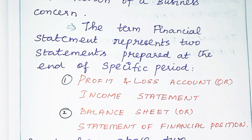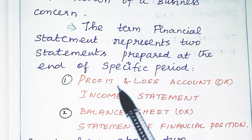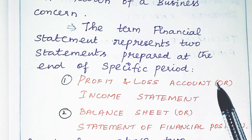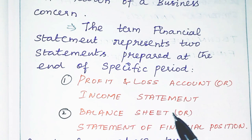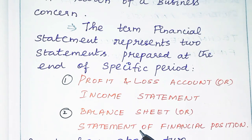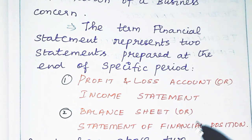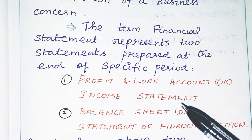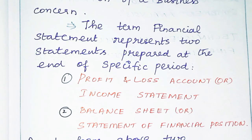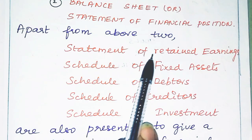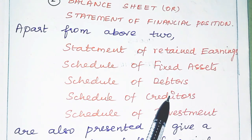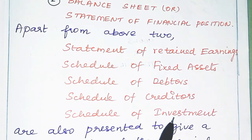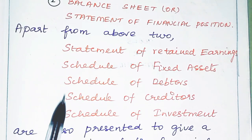A financial statement is prepared at the end of a specific period. That is the profit and loss account, which can also be called the income statement. And then the balance sheet, which is also called the statement of financial position. Apart from this, we have the Statement of Retained Earnings, Schedule of Fixed Assets, Schedule of Debt, Schedule of Credits, and Schedule of Investments.